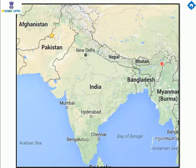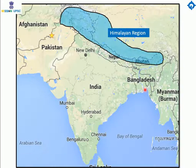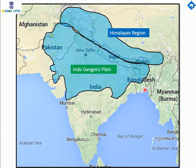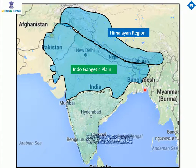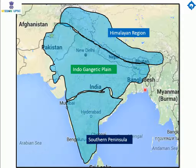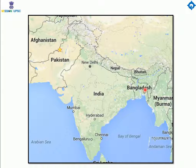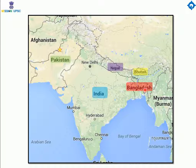India may be divided into three major regions: the Himalayan mountains, the Indo-Gangetic plains, and the southern peninsula. There are five countries in the subcontinent: India, Pakistan, Nepal, Bhutan, and Bangladesh.